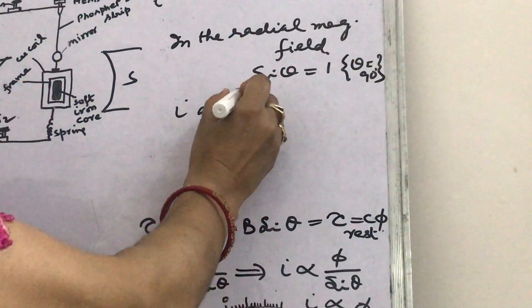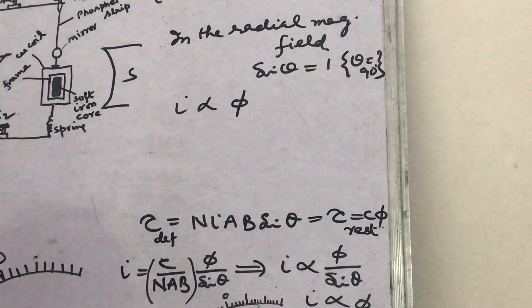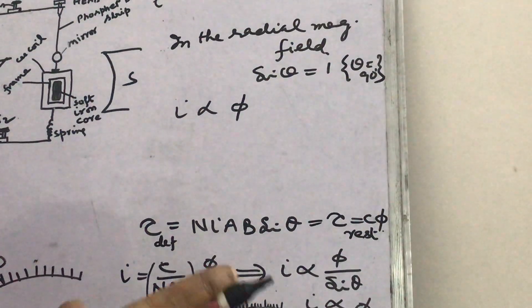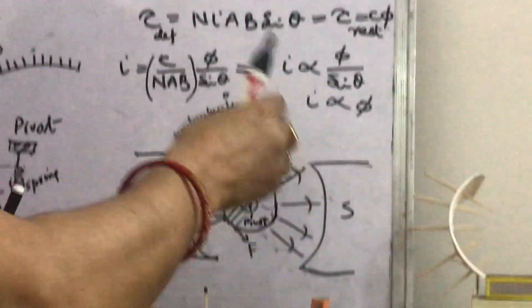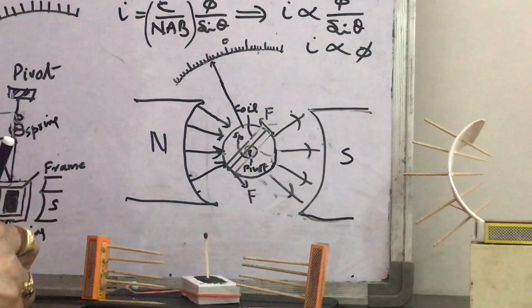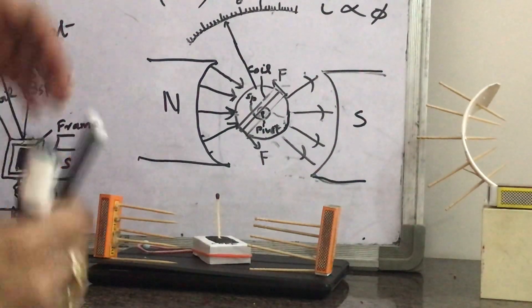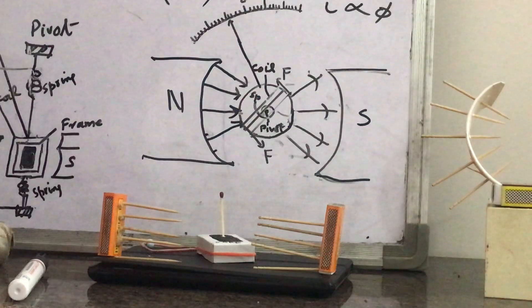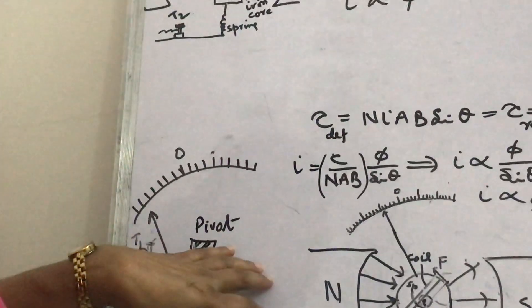Since sinθ = 1 for every position of the coil in the radial magnetic field, we get I proportional to φ. This means the pointer moves on a linear scale and we can find the direction of current.